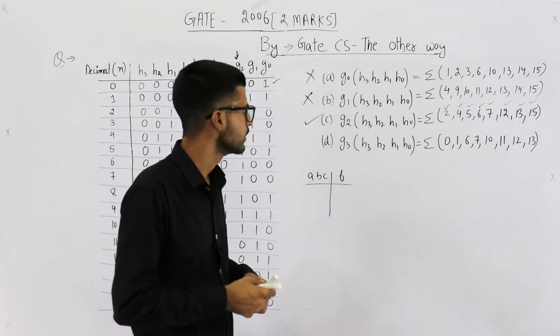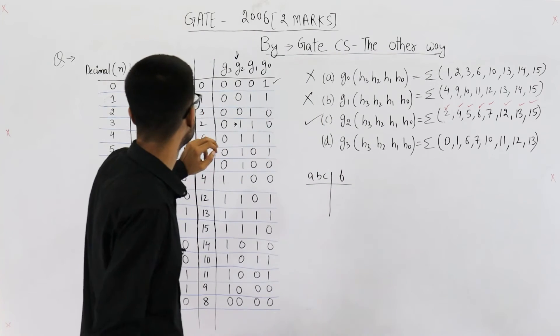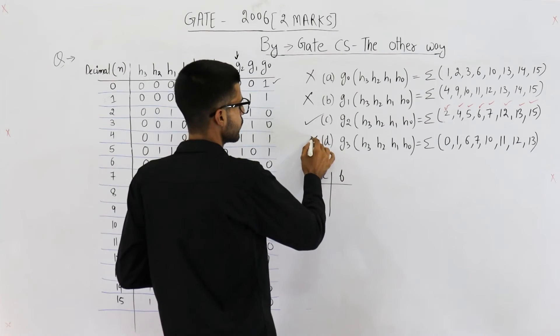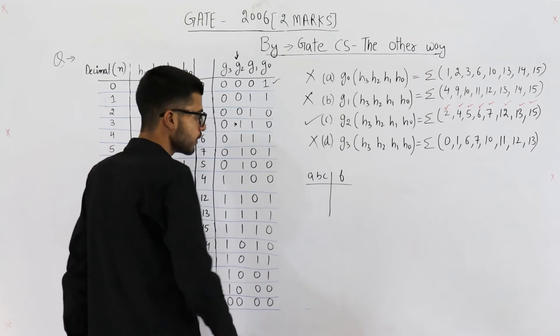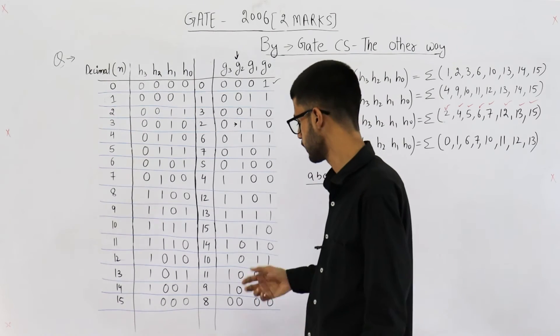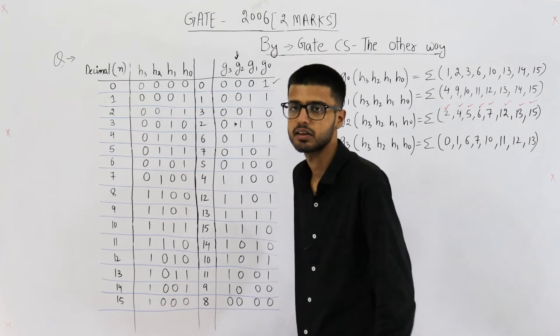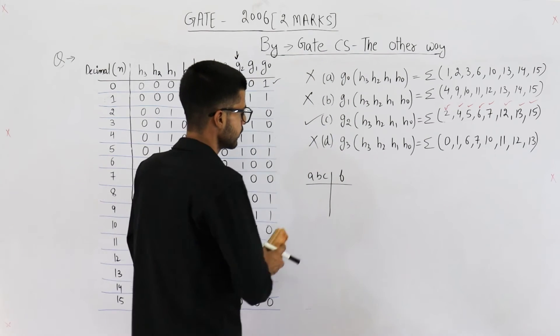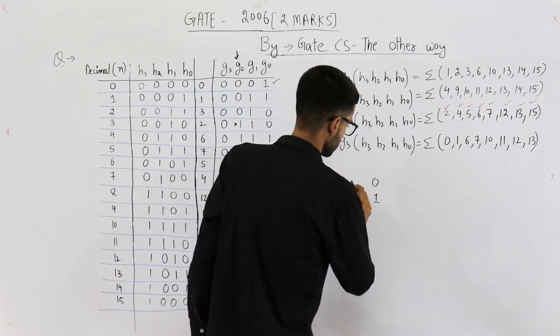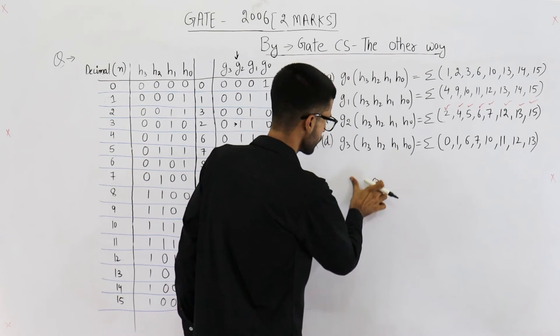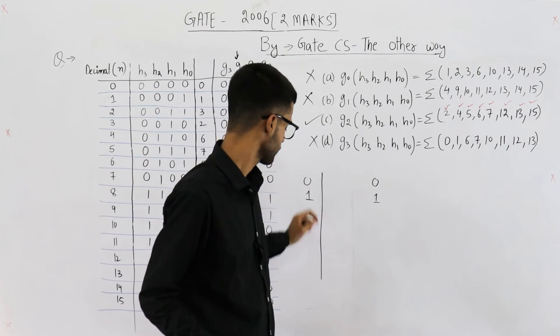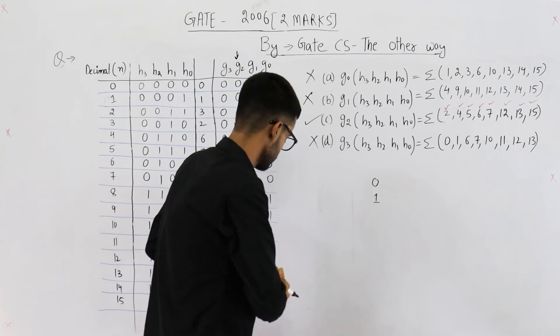Let us also have a look at this g3. They are saying g3 outputs high on 0. On 0, g3 outputs high. No, that's incorrect. So this one can be easily rejected. Option d is also wrong. Now, let me show you how did I fill this table. I have already explained the mirror property of gray code multiple times in my theory lectures. Still, I am repeating it here.